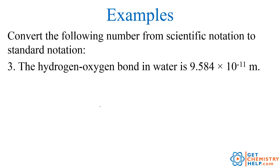So now let's try a few. We're going to convert scientific notation back into standard notation, or decimal notation. Number 3 says the hydrogen-oxygen bond in water has a length of 9.584 times 10 to the negative 11th meters. We're going to write the coefficient here first, so 9.584.